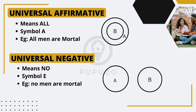The second type is the universal negative proposition, represented by the symbol E. It negates the entire subject's association with the predicate. An example of a universal negative proposition is 'no men are mortal,' indicating that there is no overlap between the category of men and being mortal.